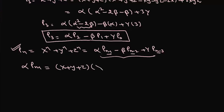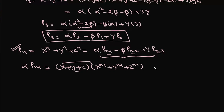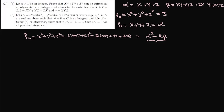You can prove the recurrence yourself, starting from α·p(n-1) where α = x + y + z and p(n-1) = x^(n-1) + y^(n-1) + z^(n-1). Multiplying these and collecting terms yields pn plus the correction terms. It is fairly simple but requires some calculation.